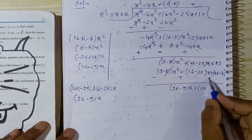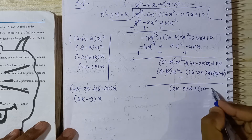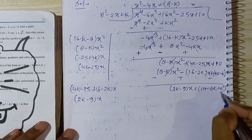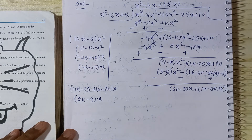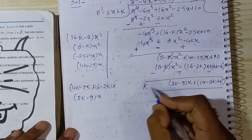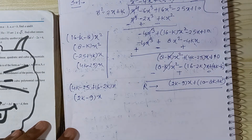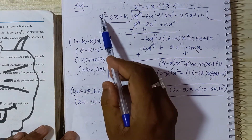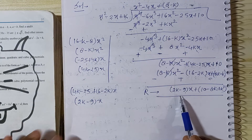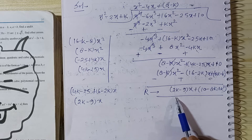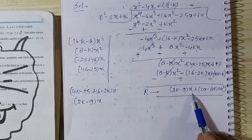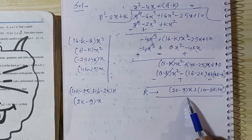So this is our remainder. It is not possible to divide further because the degree of the remainder is less than the degree of the divisor. The divisor has degree 2 and the remainder has degree 1. Since the degree is less, we stop. So this is our remainder.